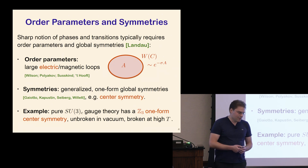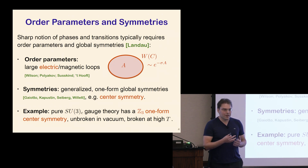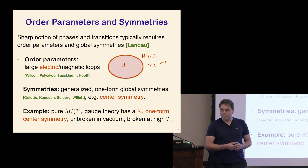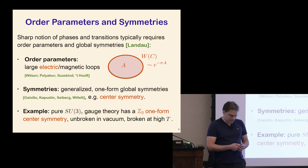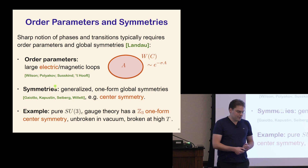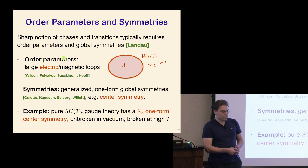In order to get something resembling a sharp definition of a phase and a sharp prediction for a transition between phases, one typically requires, in the spirit of the Landau paradigm, something like an order parameter and a global symmetry that acts on it and can be broken or unbroken in different phases. It's been known since the early days of QCD that the correct order parameters for gauge theory phases are large loops — large electric loops, most famously the Wilson loops in QCD.